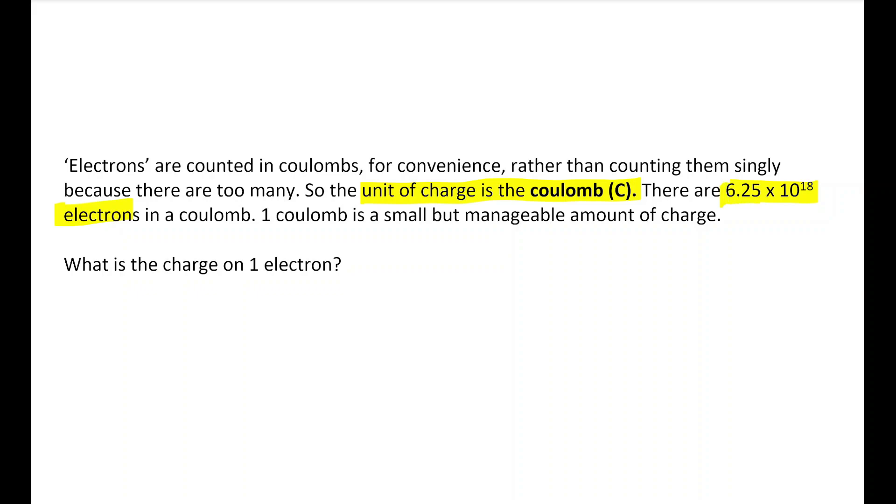If you know that there are this many electrons in a coulomb, then you should be able to calculate what the charge on each electron is. So 6.25 times 10 to the 18 electrons per coulomb. That means 1 over that is going to give you the charge on an electron. That is 1.6 times 10 to the minus 19 coulombs.